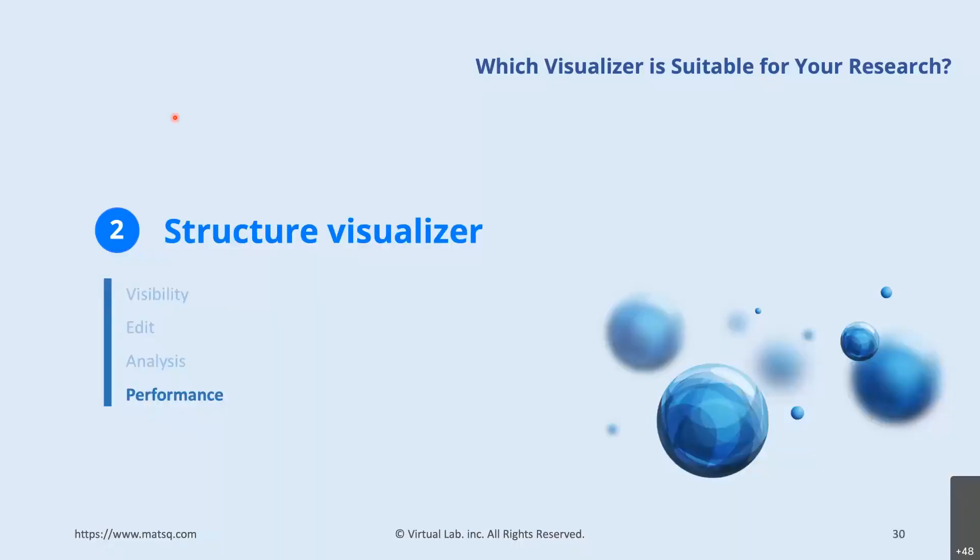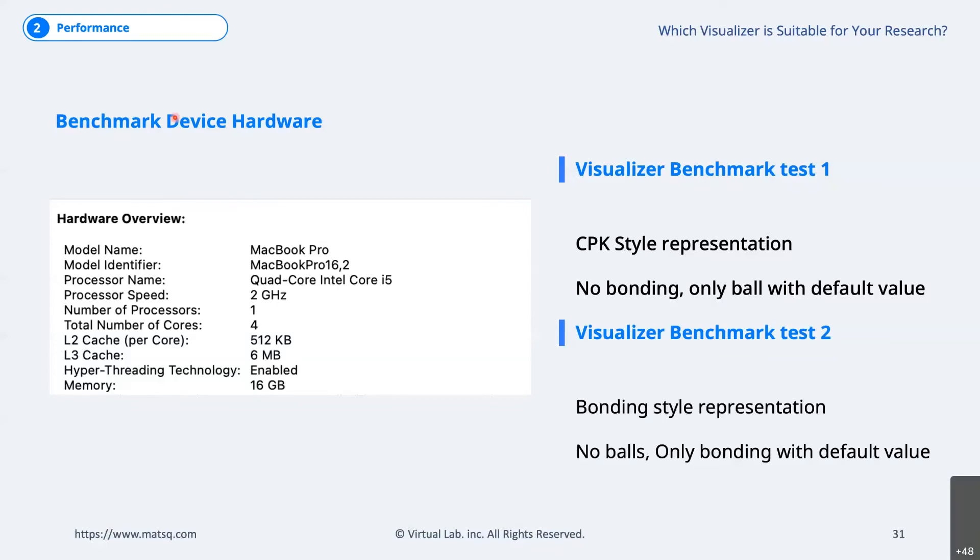So, performance. The visualizer cannot be ranked by performance. I just wondered how many atoms or bonds could be represented in a particular device. So, I did simple test of five visualizers on my high-performance laptop. First, the specs of my laptop are as follows. The quad-core i5 memory is 16GB. And the tests were conducted in two ways. And the structure was tested with atoms from a thousand to a hundred thousand. Test one only showed atoms and test two showed bond only. The test results are as follows.